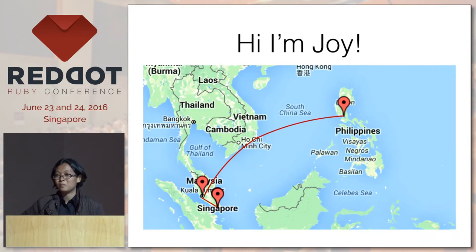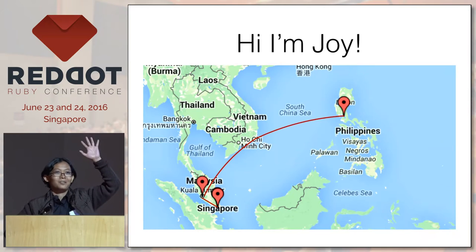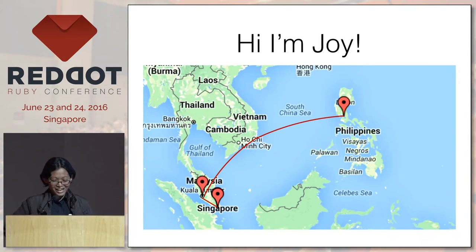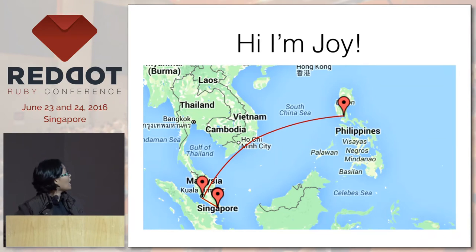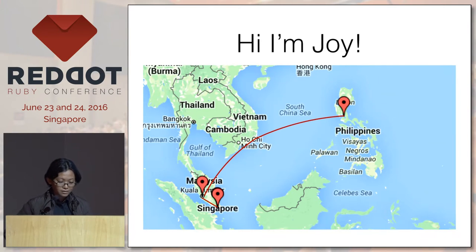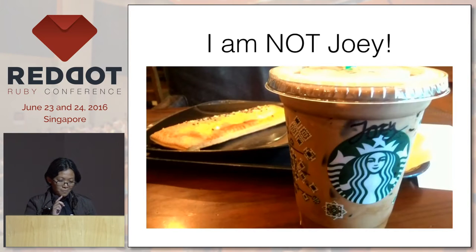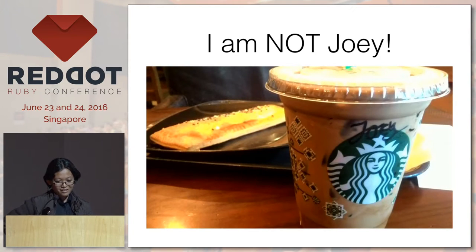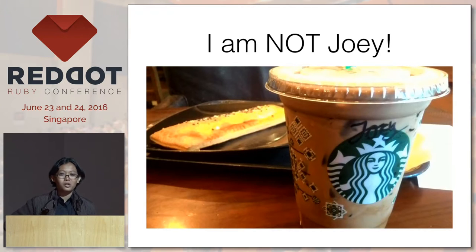I am from the Philippines. Anyone else from the Philippines here? Raise your hands. Quite many — nice to see you here. Actually, before I went to Singapore, I was in Malaysia for a couple of days. They made a mistake in my name in Malaysia — they thought I'm Joey. I am not Joey. I am Joy. J-O-Y. Just three letters.